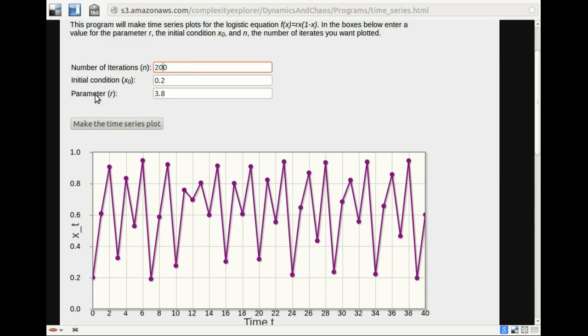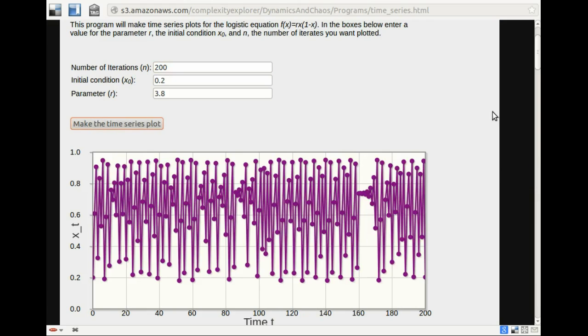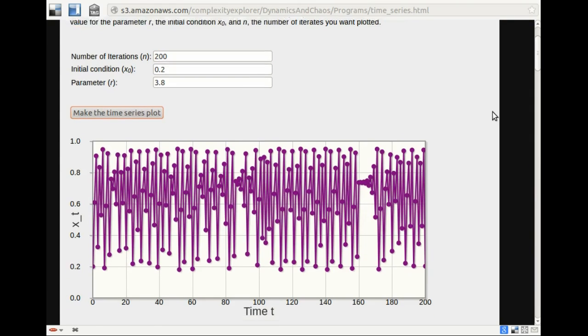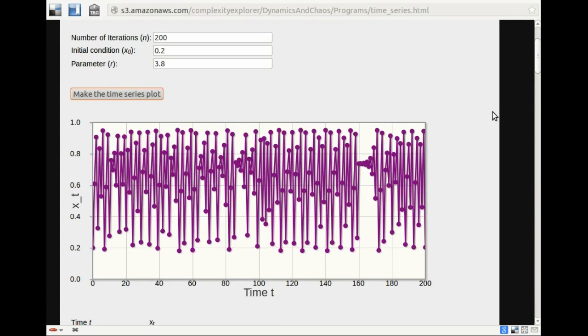So in this view, we can see that the orbit is aperiodic. It's not settling down into any cycle. And it seems to range from a little bit below 2. Maybe .18 is the minimum. And about .95 or a little bit more. So it doesn't fill up the entire interval. It doesn't make it down here. It doesn't make it to the very top.